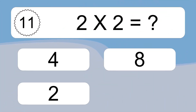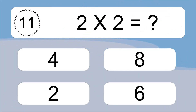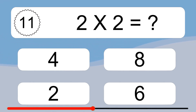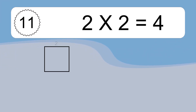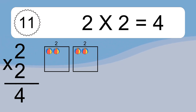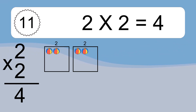Two times two equals what? Two times two equals four. We have two boxes, and each box has two colorful balls inside. If you count all the balls in all the boxes together, you will have two times two balls. This equals four balls.